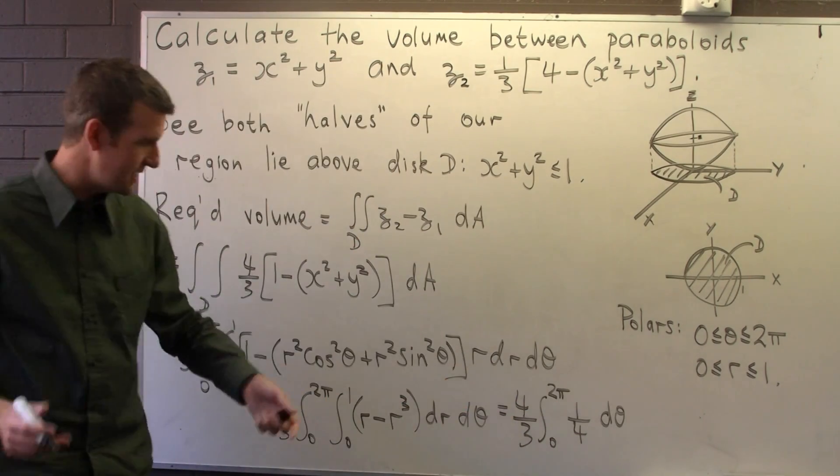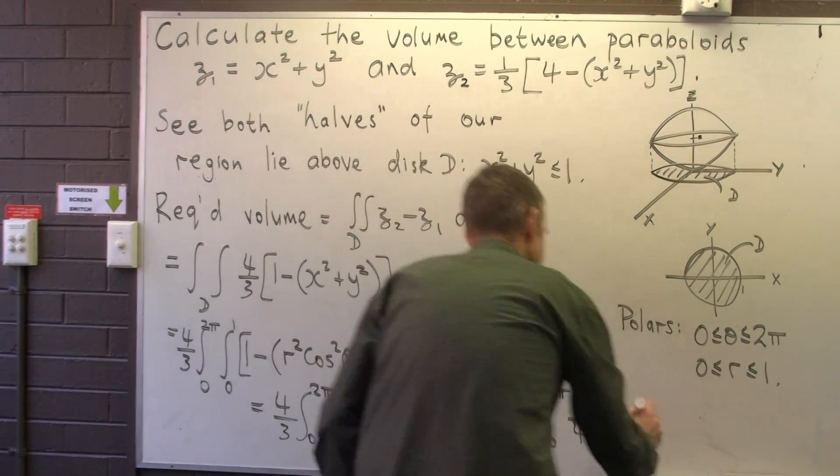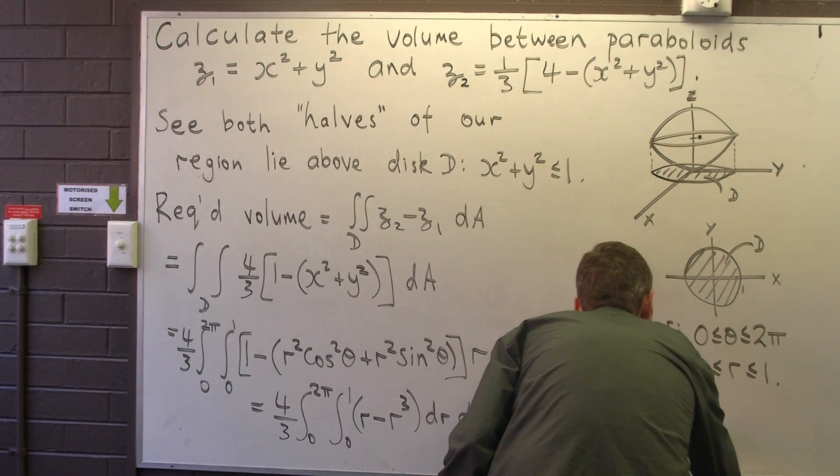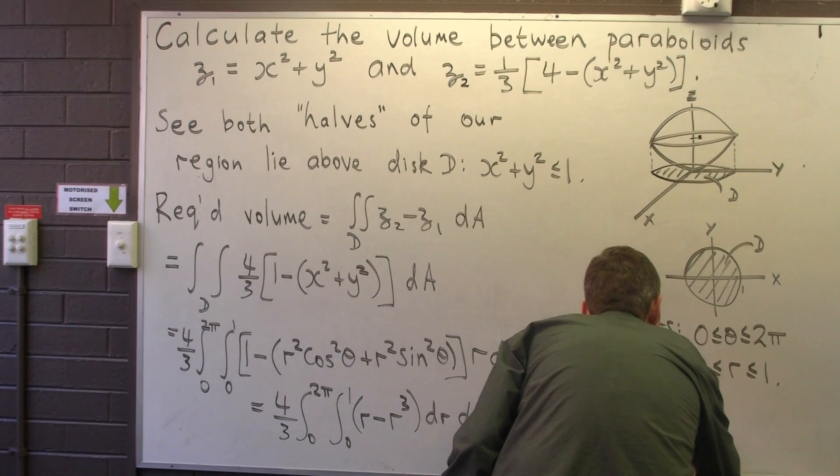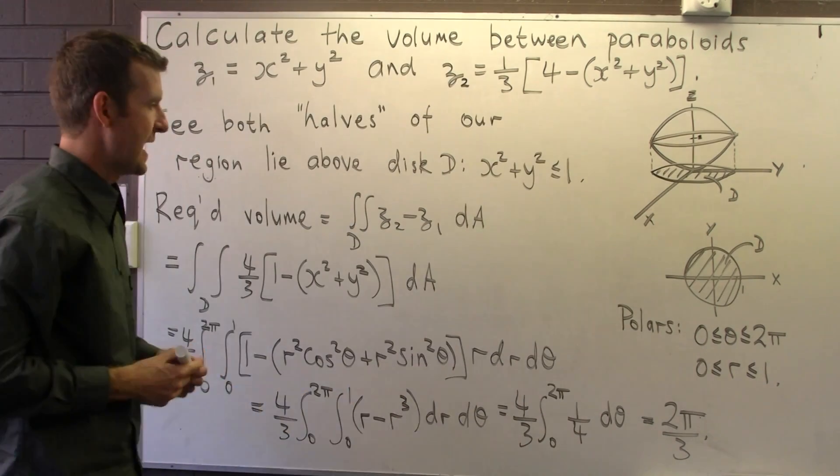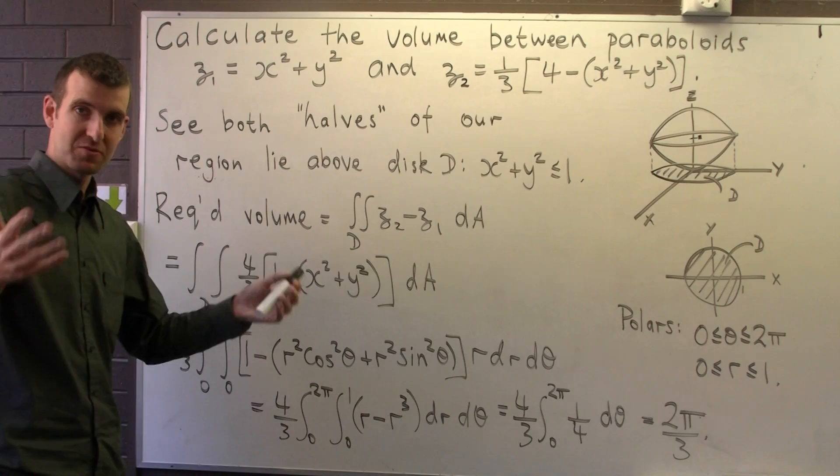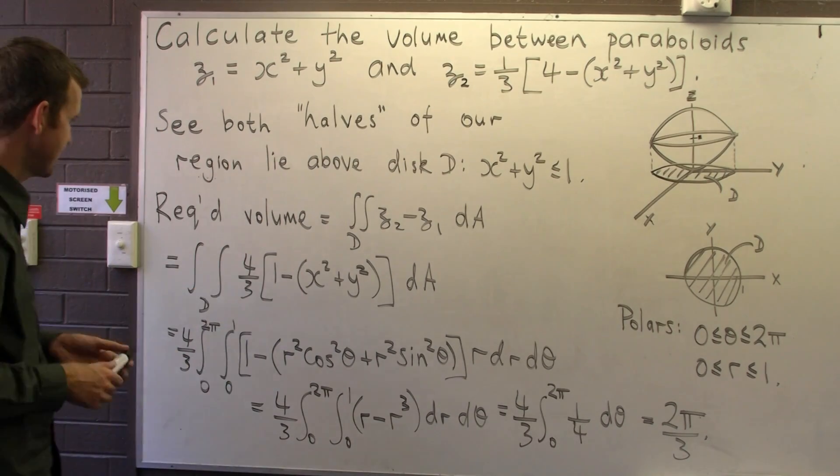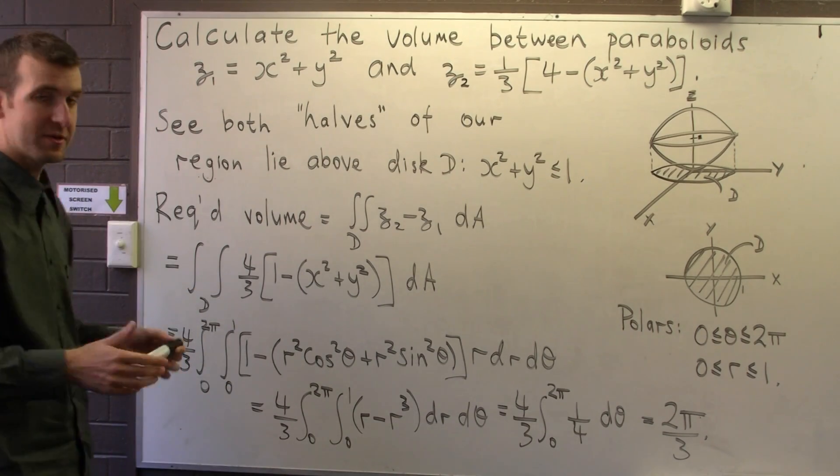And then just a simple integration here. We end up with 2π on 3, and I guess we're talking about volume here so we should mention cubic units.